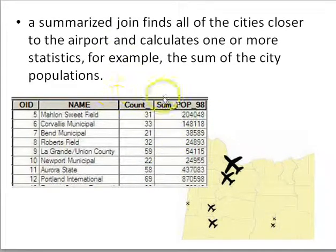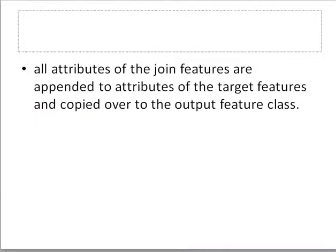A summarized distance join tells me how many features are near a given destination. When doing a spatial join, I'm getting the attributes of the source feature appended to the attributes of the destination feature.